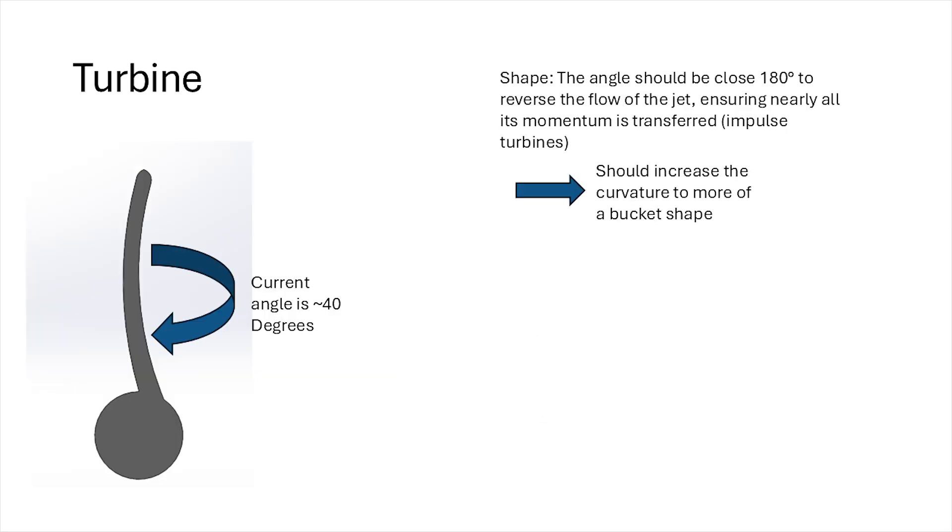And for the individual blades themselves, when I looked into the shapes used for impulse turbines, they tend to have more of an aggressive, kind of a bucket shape to them, since the idea is to try and capture as much of the momentum coming out of the jet. This means, for the second iteration, we could probably do with a more aggressive curve.